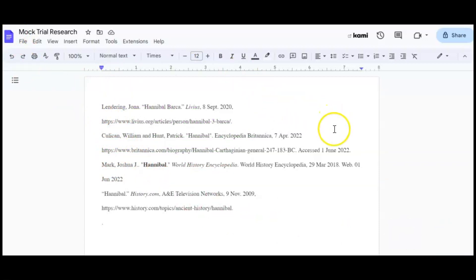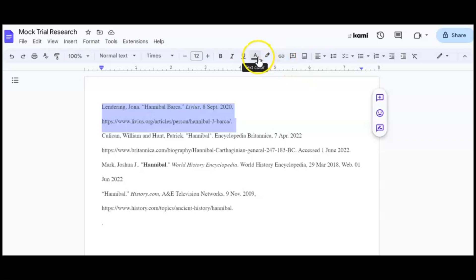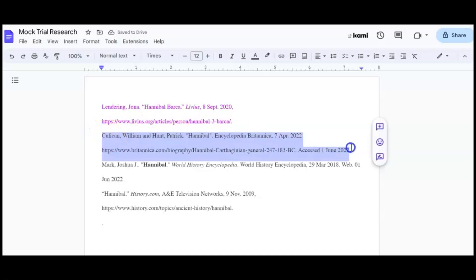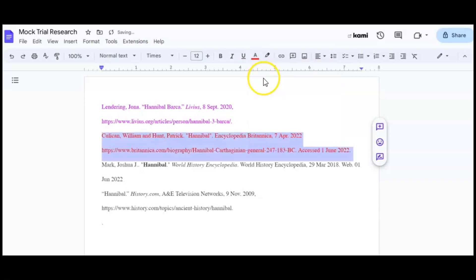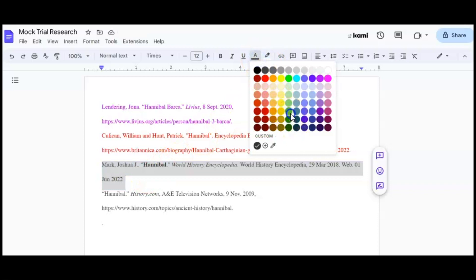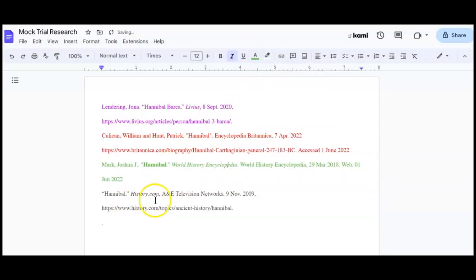So here is a Sample Works Consulted page - my mock trial research. And here are my sources. I have four of them here. And just to kind of help you see the different sources, this one uses livius.org as the website, and I'm just gonna give it a color here. And then this one is Encyclopedia Britannica, so I'm gonna give that one a color. And then this one is World Encyclopedia - let me give that one a color. And I'll leave this one black, which is history.com. So I have my four sources.